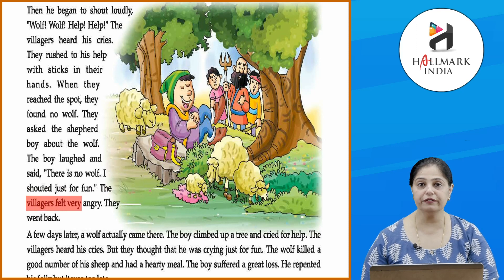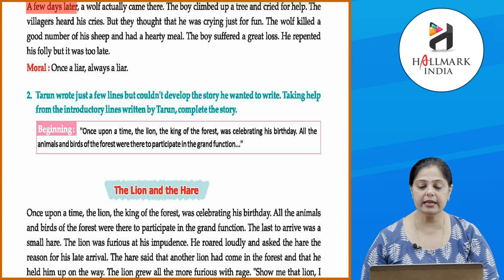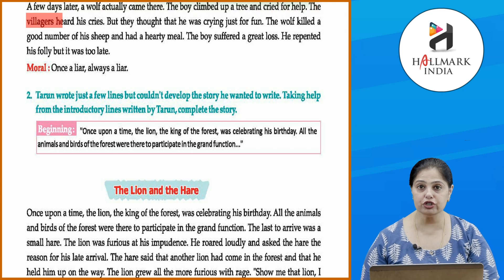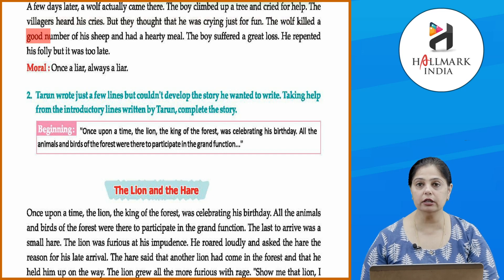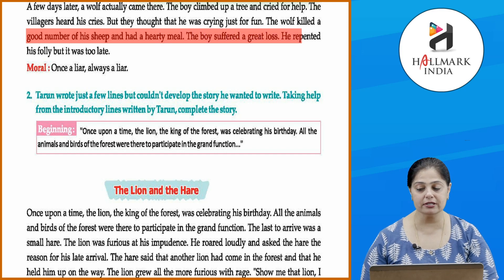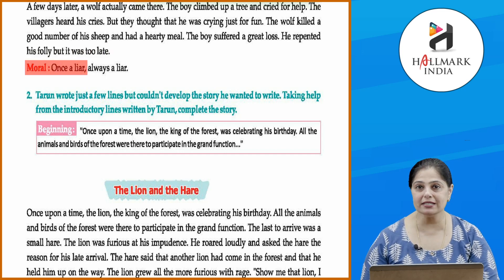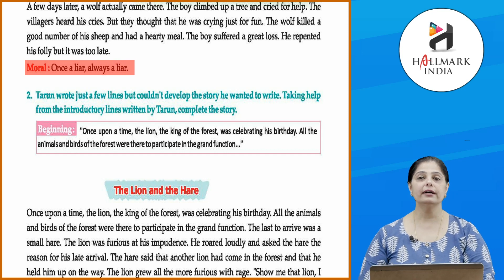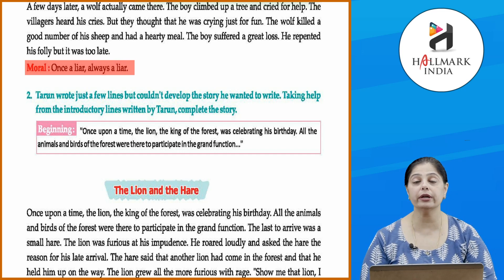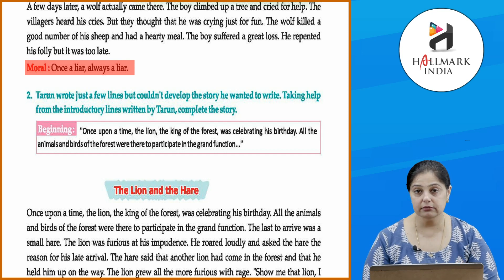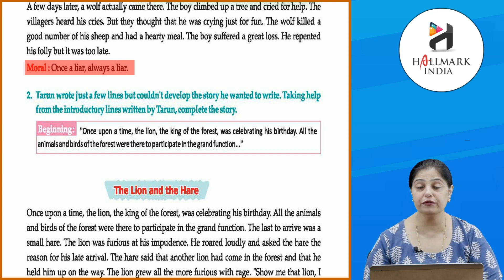They asked the shepherd boy about the wolf. The boy laughed and said, 'There is no wolf, I shouted just for fun.' The villagers felt very angry and went back. A few days later a wolf actually came. The boy climbed up a tree and cried for help, but the villagers thought he was crying just for fun. The wolf killed a good number of his sheep. The boy suffered a great loss and repented his folly, but it was too late. Moral: Once a liar, always a liar.